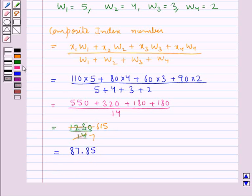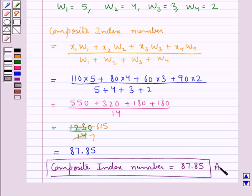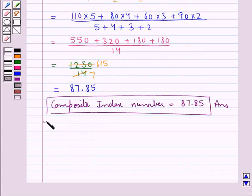So thus we have the composite index number is equal to 87.85. This is our final answer. This completes the session, so if you have understood the solution of this question